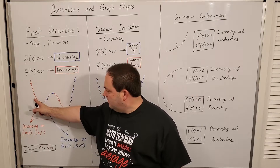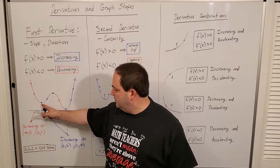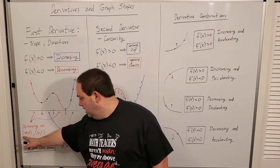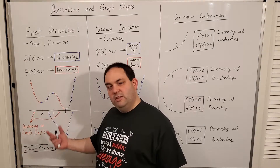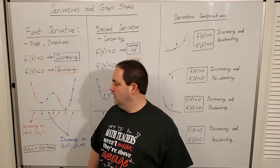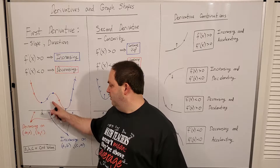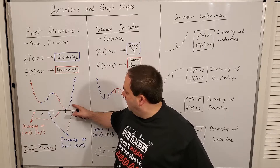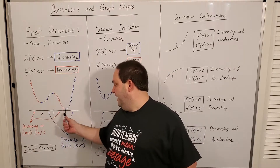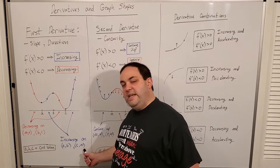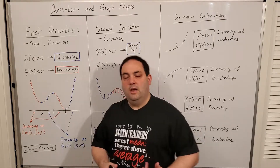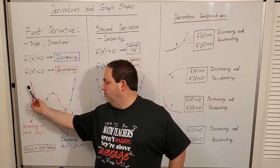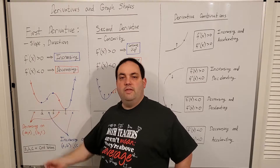In the red sections you can see the graph is decreasing up until certain critical values, and those are the intervals from negative infinity to a and from b to c that we'd label as decreasing. You can see where between critical values a and b there's a blue section of increase, and to the right of critical value c there's another blue section. Those are the intervals labeled as increasing from a to b and from c to infinity.